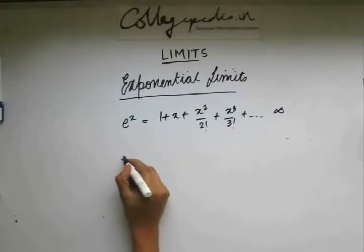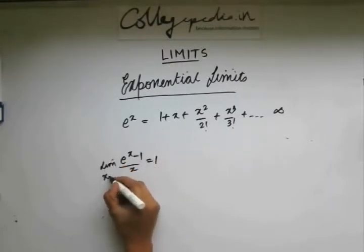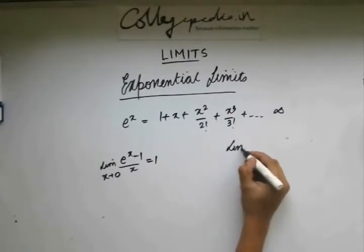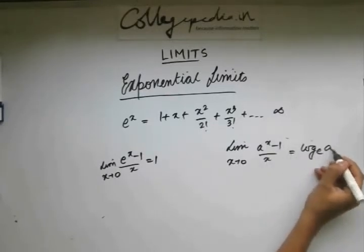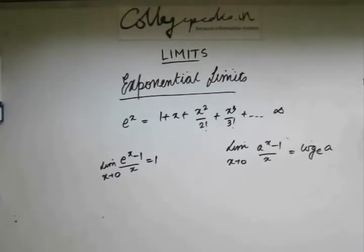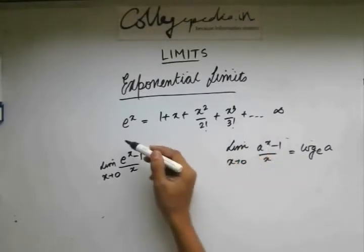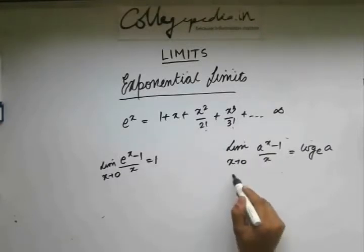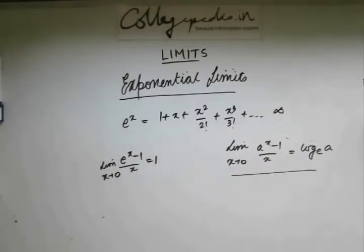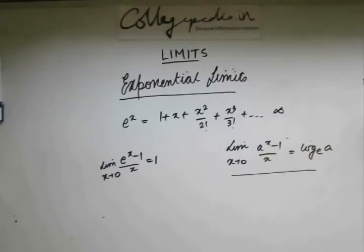Now the standard result is e to the power x minus 1 by x, limit x approaches 0, equals 1. And the other standard result is a to the power x minus 1 by x equals log a. These are the two standard results. To prove the first standard result, again what you need to do is you put the expansion of e to the power x here and cancel the x terms and then put the limit. You'll get this. Similarly for this one, put the expansion for e to the power x which we had discussed when we were starting the chapter limits. And then you'll see that you'll get this result. So without wasting much time, now let's move on to the problem section of exponential limits.